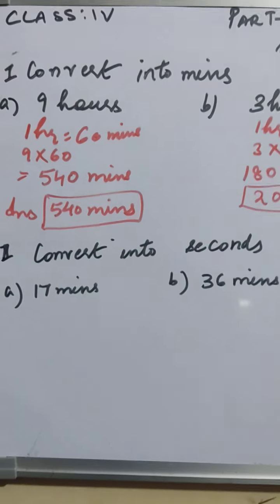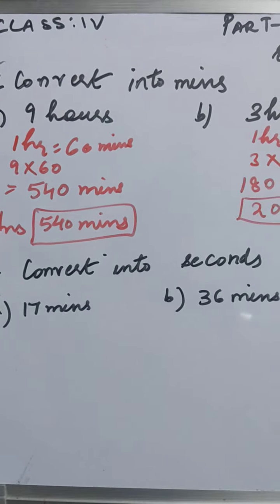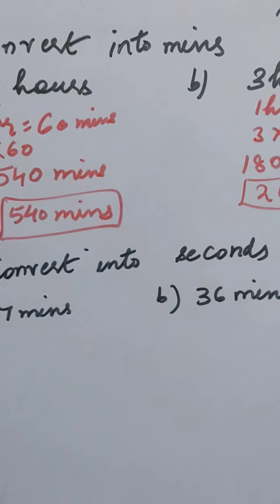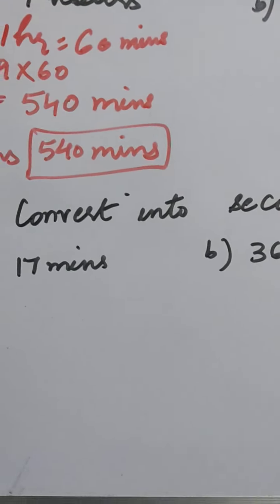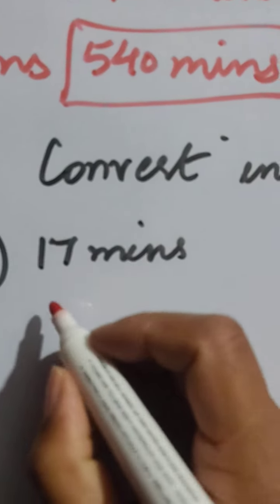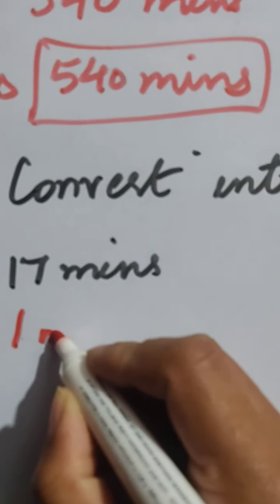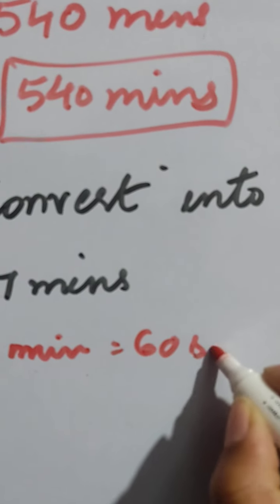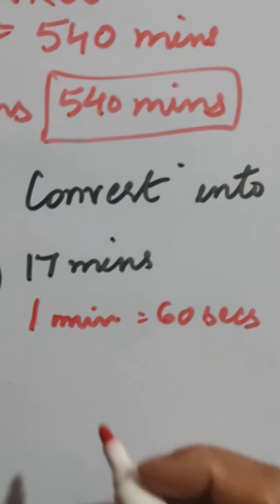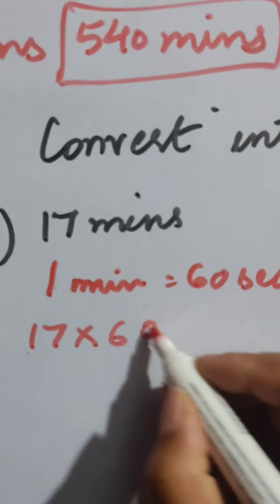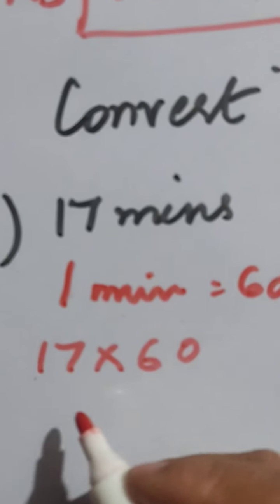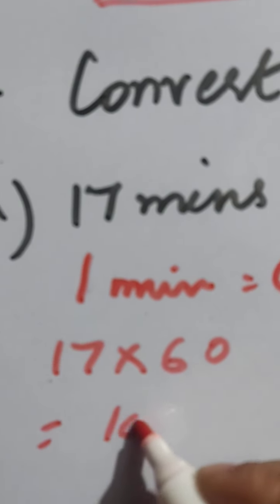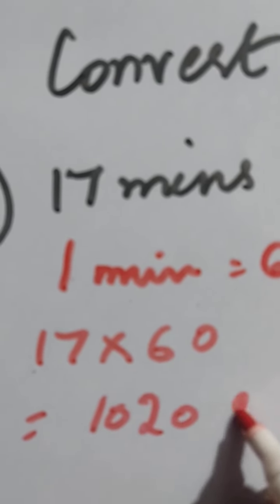Now let's see another question. Question number 2, convert into seconds. We are going to convert the minutes into seconds. Minutes is bigger and the relationship is same. One minute is equal to 60 seconds. Write down the relation. 60 seconds. And now 17 multiply by 60. For this you need to know 17's table. 17 times 6 is 102. Add a 0 with it and you get 1020 seconds.